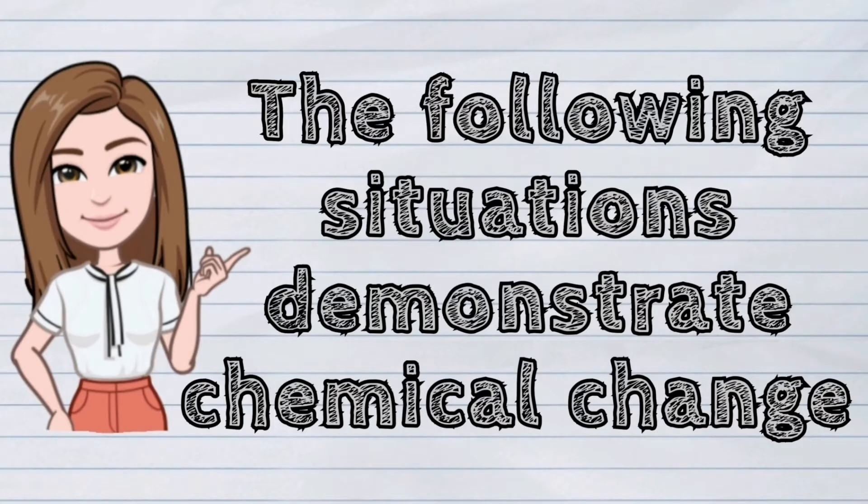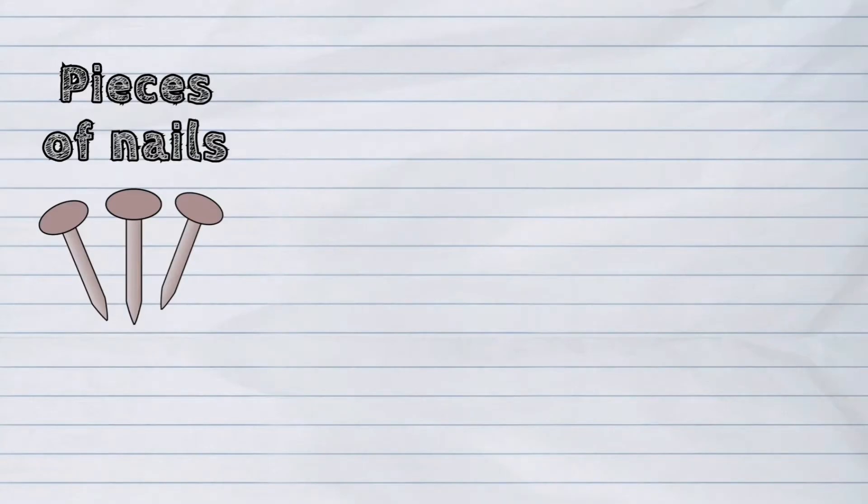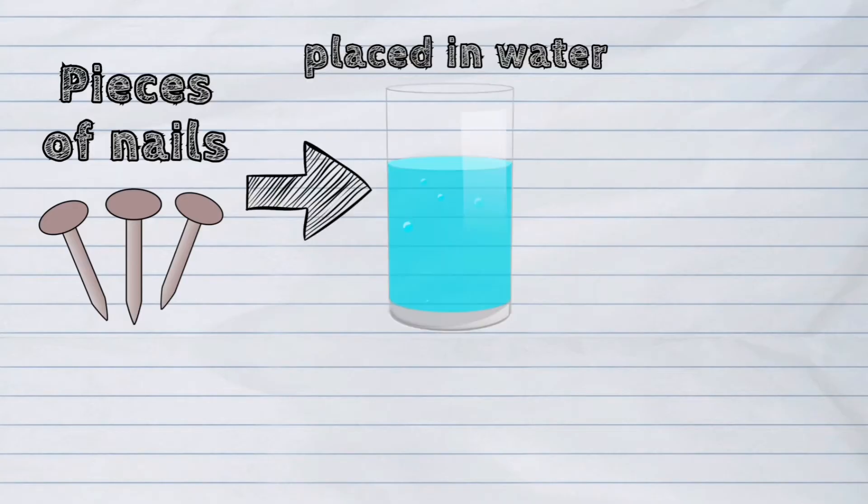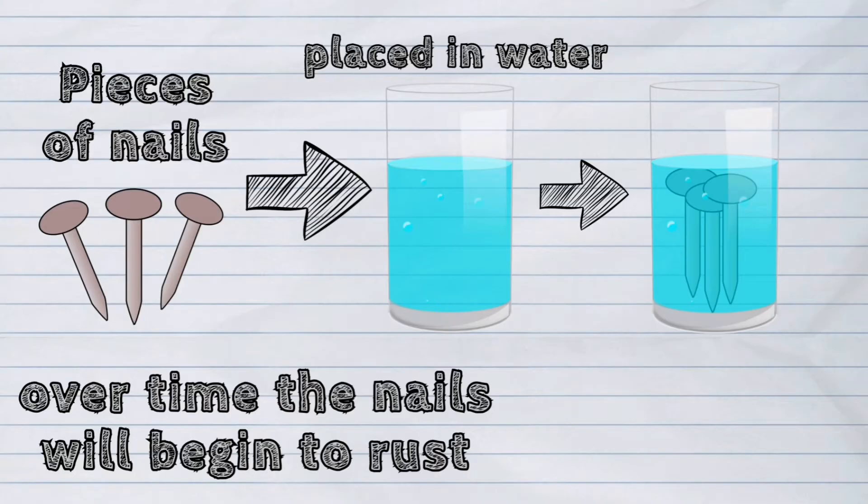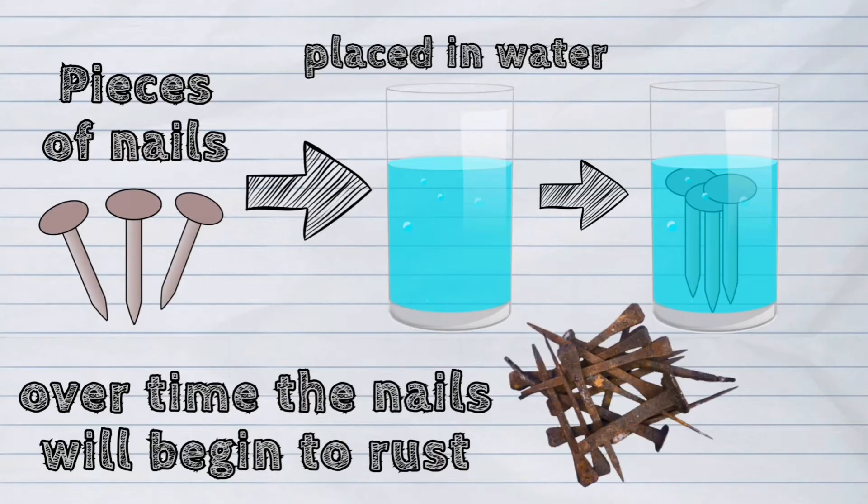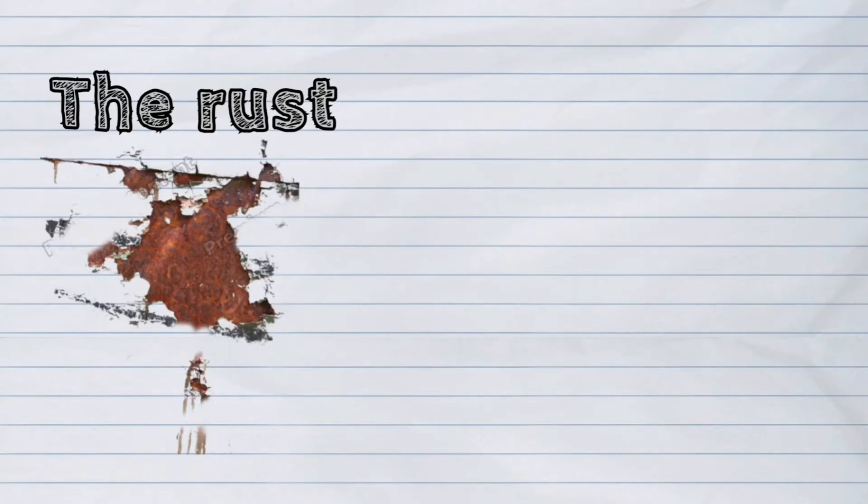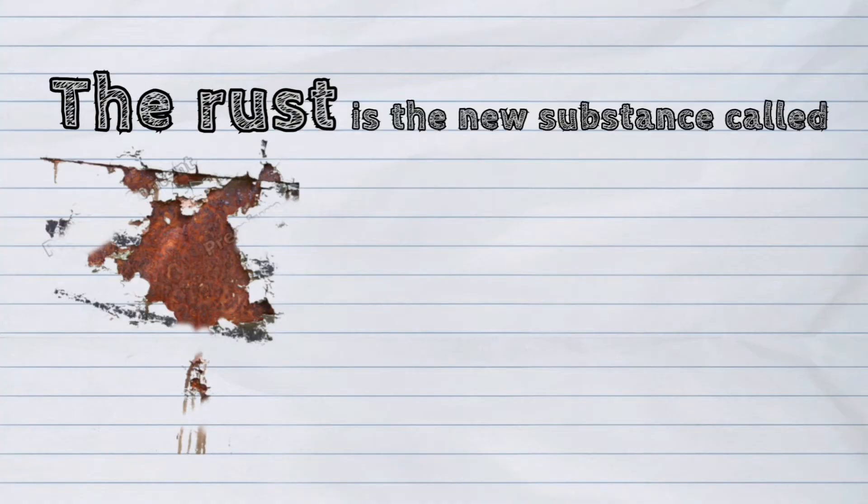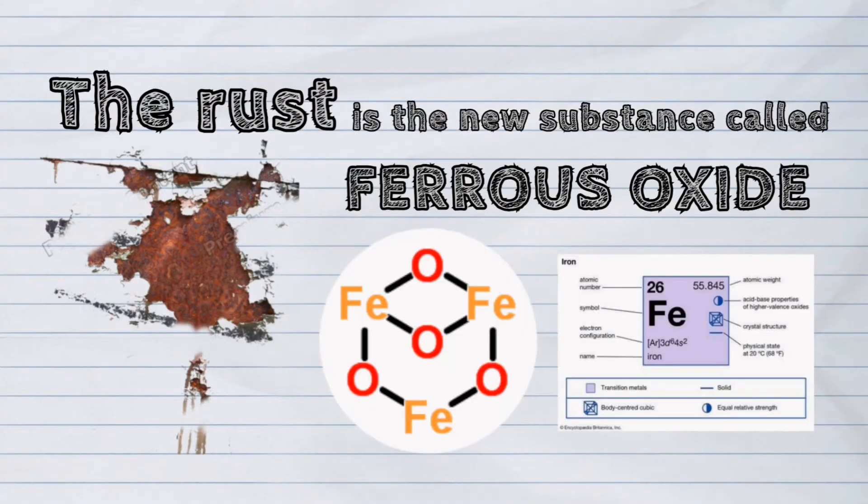The following situations demonstrate chemical change. First, when pieces of nails are placed in water. Over time, the nails will begin to rust. The rust is the new substance called ferrous oxide.